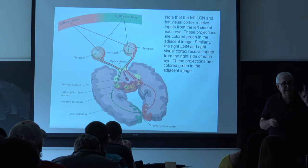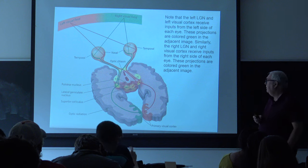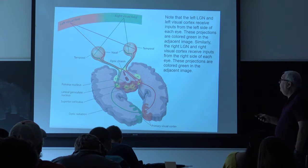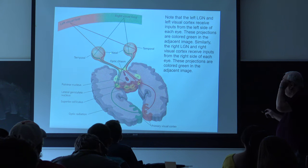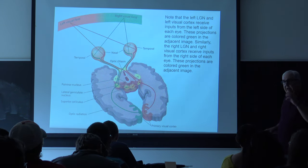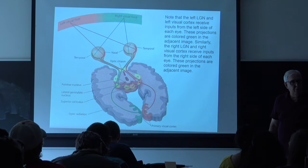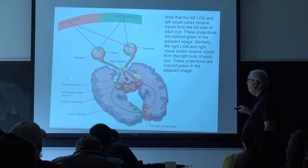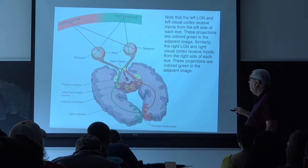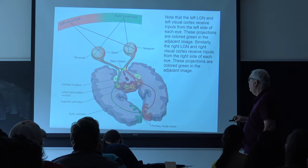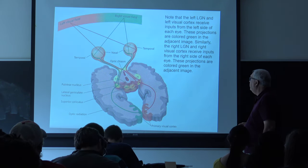We'll come back to this a little later when we talk about visual attention. Now from the optic nerve, the cells project to a region literally in the very middle of the brain called the lateral geniculate nucleus. There are also a couple of side pathways to the pulvinar nucleus and the superior colliculus, which I'll come back to later.